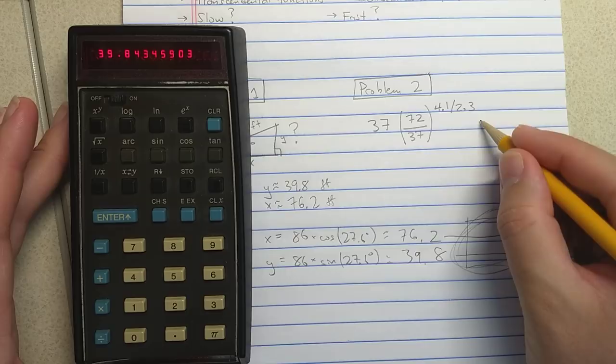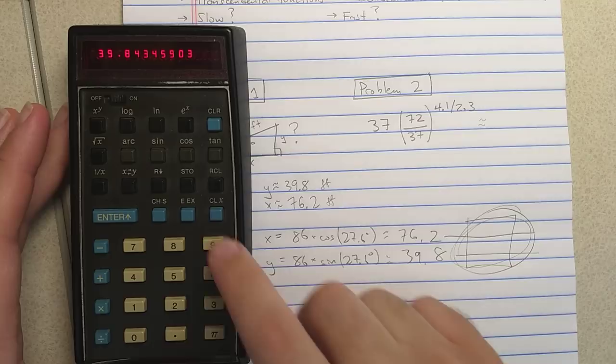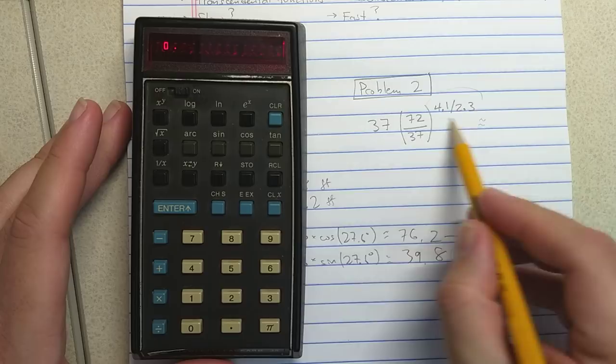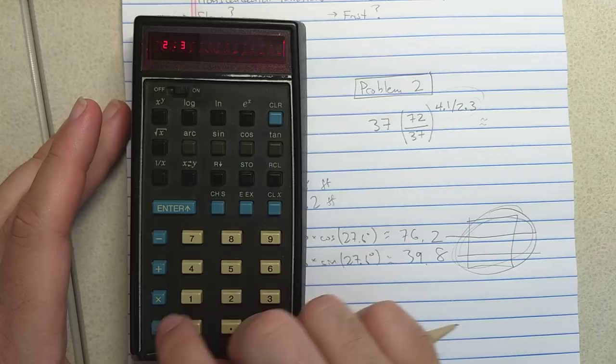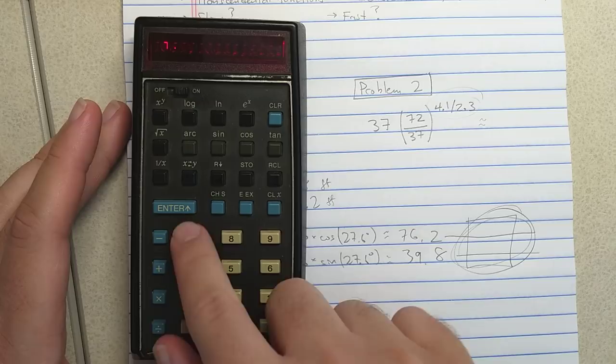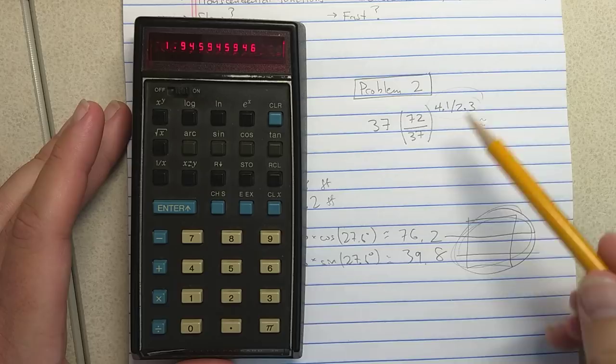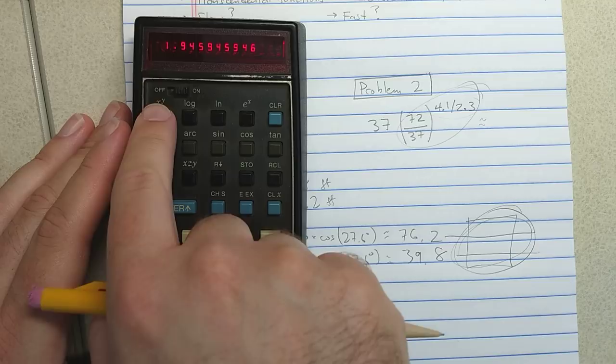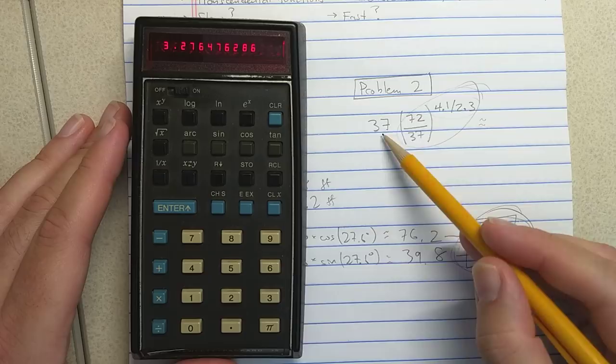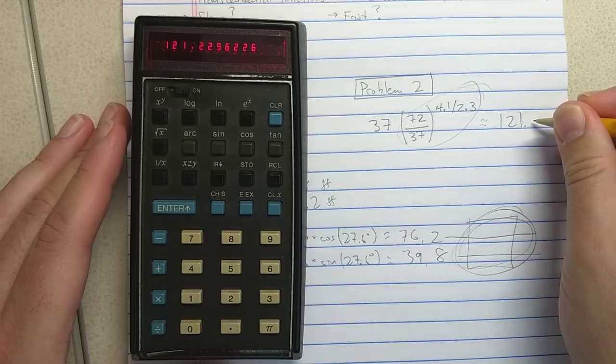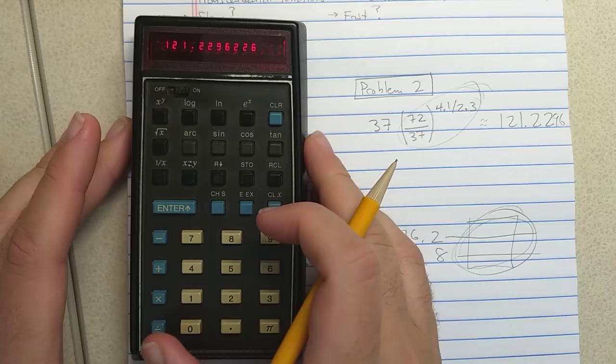Let's look at this. Here I just want to compute this expression, calculate this approximately. Let's do this one first on the calculator, so let's clear. So to compute this on the HP 35, you should start with the exponent. So let's compute 4.1, enter, 2.3, divide, that's the quotient of those two numbers. Now I'll compute the quotient of these two numbers, 72, enter, 37, divide. Then to compute this expression, I press this x to the y. This is something a pocket 4 function calculator cannot do. So now I've computed that, and then I need to multiply by 37, so 37 times. And I get here 121.2296.